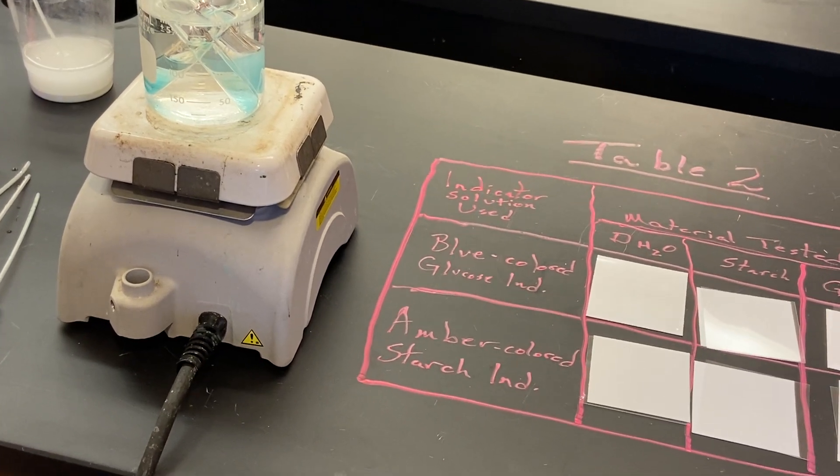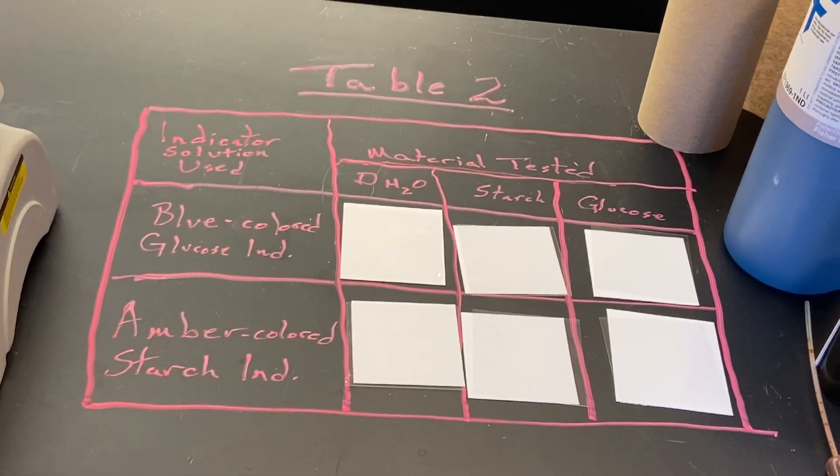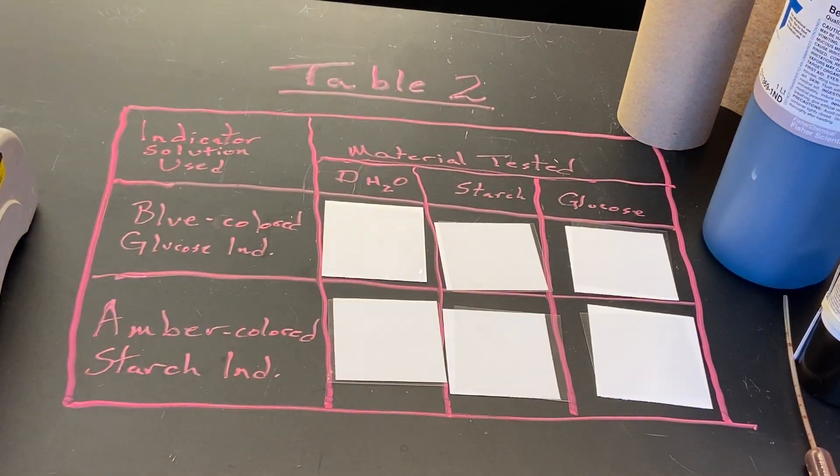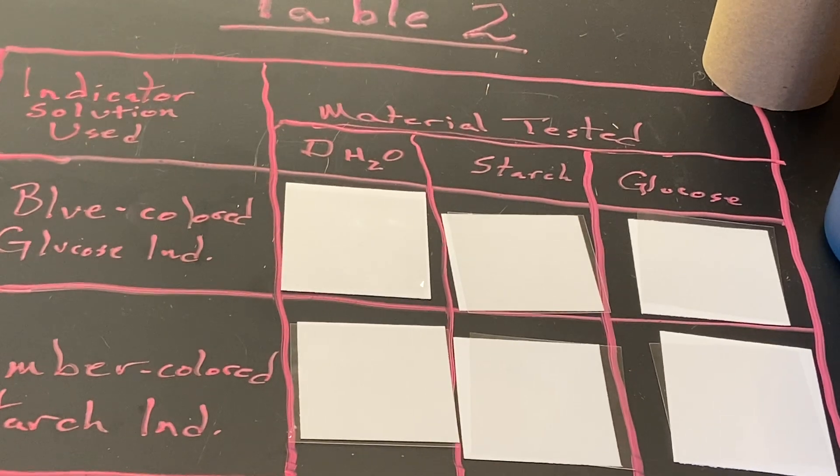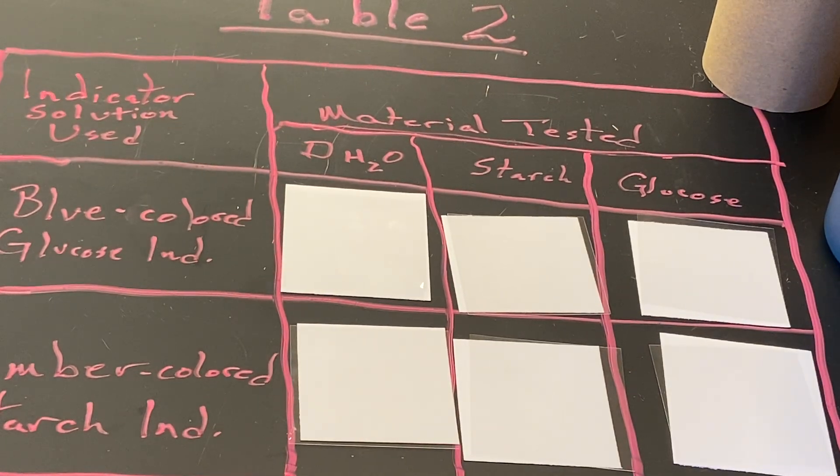The next test is a little bit easier because we don't have to heat it. That is the amber colored testing solution, sometimes called Lugol solution or iodine solution. I'll zoom in a little bit so we can see what's going on.